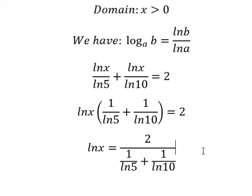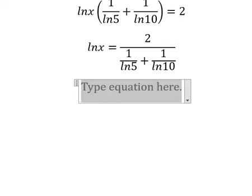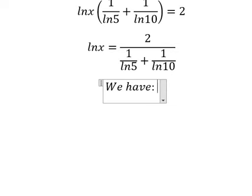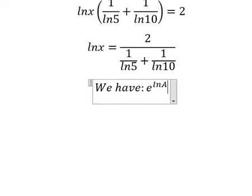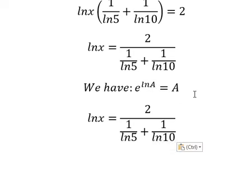Next we have the second formula, which is e to the power of ln(A) equals A. So I will put e as the base for both sides to eliminate the natural logarithm.